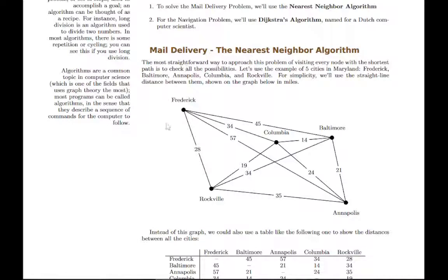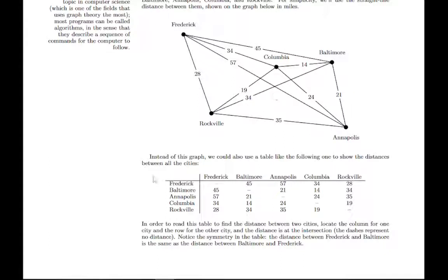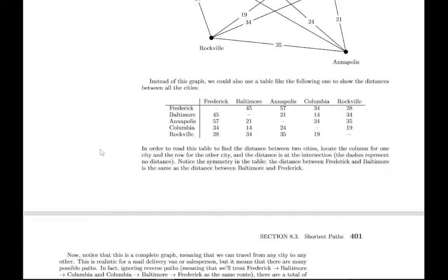For the nearest neighbor algorithm, we're going to start with this example. We have five cities in Maryland, and we're looking for the most efficient route covering all five cities. You can take any route through these because they're all connected to each other — for example, going from Frederick to Annapolis, then to Columbia, then to Rockville, then to Baltimore. You can see the information with a picture or in a table, and the homework alternates between both. This table lists the distance between any pair of cities — from Frederick to Baltimore is 45 miles, for instance. Notice the table is symmetric: the distance from Frederick to Baltimore is the same as from Baltimore to Frederick.